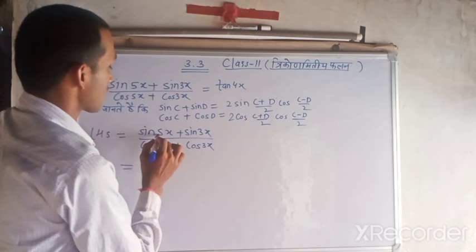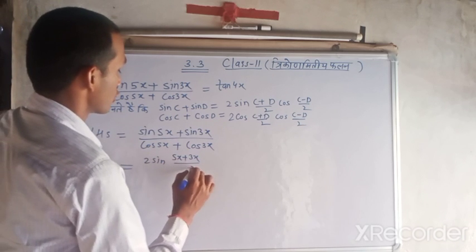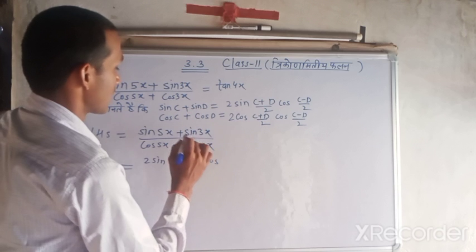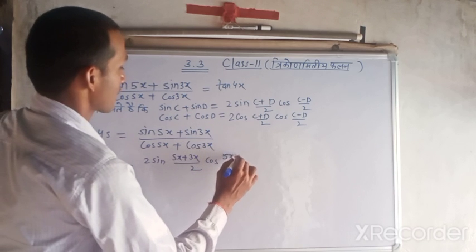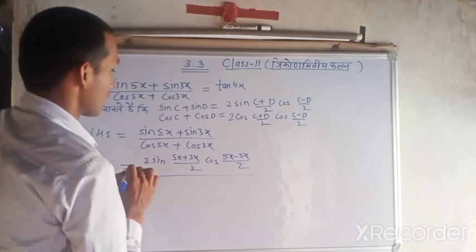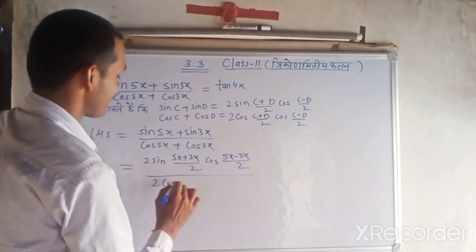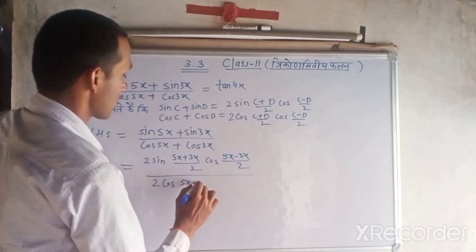Here, in place of C we have 5x, so (5x + 3x)/2, cos C minus D means (5x - 3x)/2, upon cos C + cos D, which means 2 cos (5x + 3x)/2...